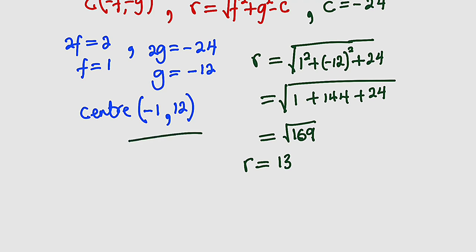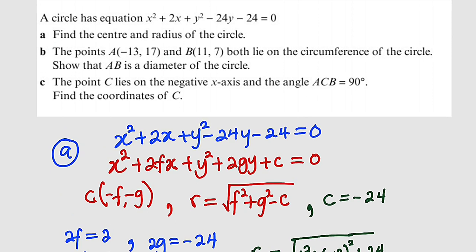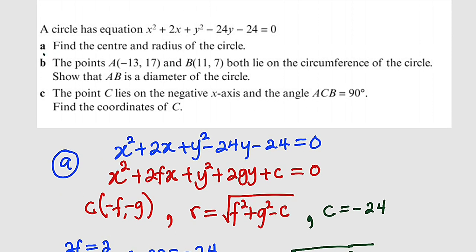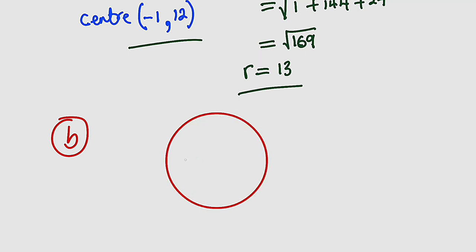So we have obtained the center of the circle as negative 1, 12, and the radius as 13 units. You can also convert the equation into standard form, but we are not going to do that in this tutorial. For part B, it states that we have a line segment AB lying on the circumference of that circle, and we are asked to show that AB is a diameter. Let us construct a circle with a line AB.